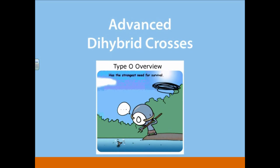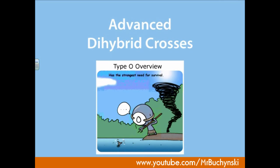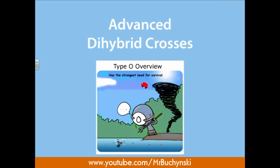Hey there and welcome back to Mr. Hrushinsky's video tutorials. In this episode we're going to look at advanced dihybrid crosses — we're going to be pushing dihybrids to the limit. We're looking at epistatic interaction, multiple alleles, codominance, and even some sex-linked inheritance. Basically these are going to be the hardest dihybrid questions you're going to be facing, and we're going to take a look at a few examples here today.